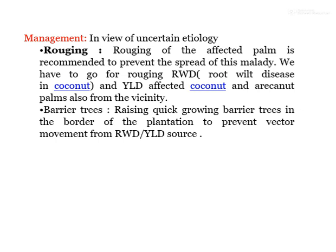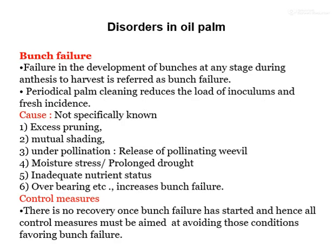Bunch failure: failure in development of bunches at any stage from anthesis to harvest is referred to as bunch failure. Causes include excessive pruning, mutual shading, under-pollination or pollinating weevil stress, prolonged drought, inadequate nutrient status, and overbearing. Periodical palm cleaning reduces inoculum load. There is no recovery once bunch failure has started, so all control measures must address and avoid conditions favoring bunch failure.